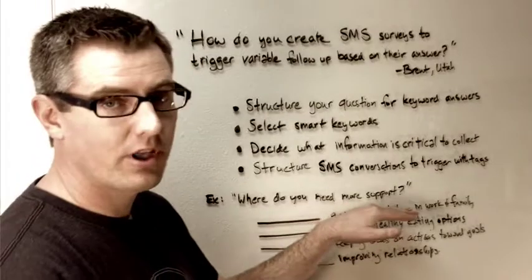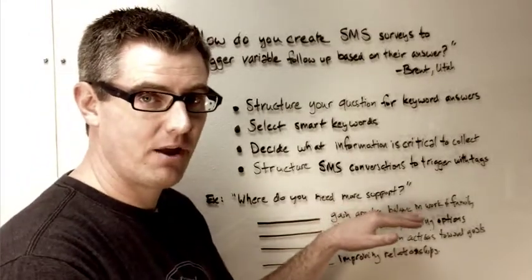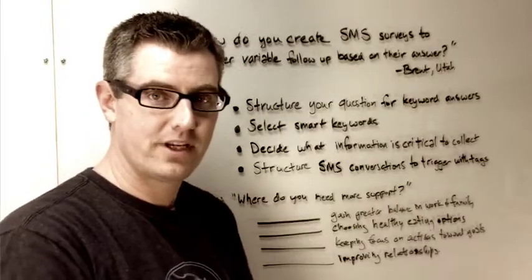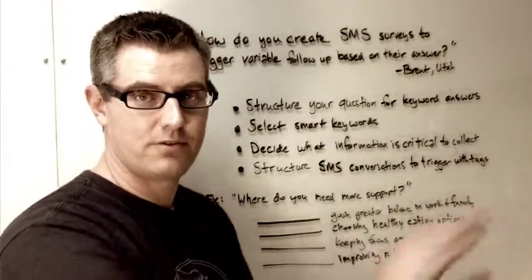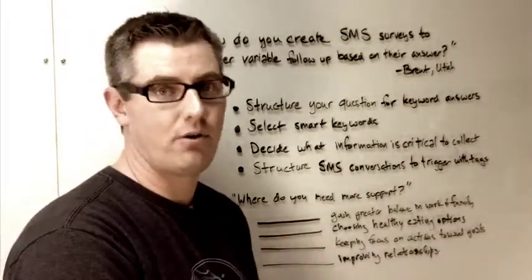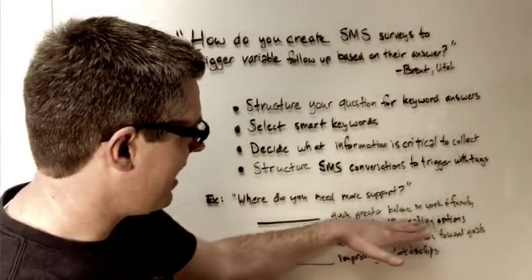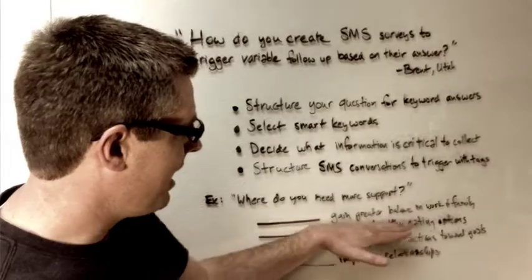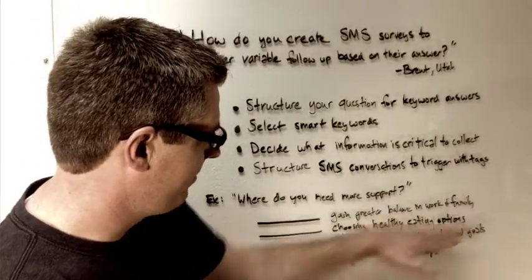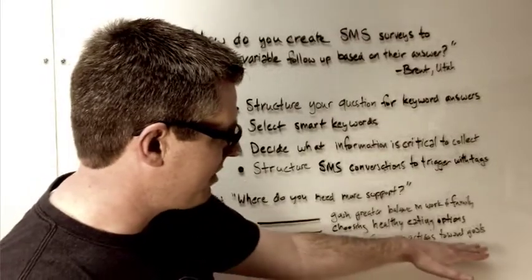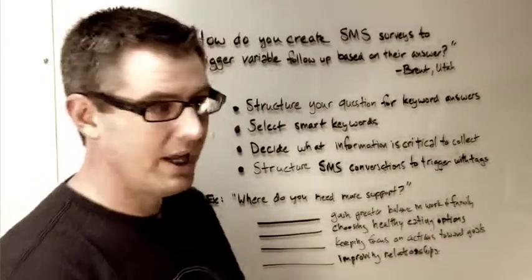So in that case, he came up with four different potential answers where he would be able to service somebody. So where do they need more support, letting them dictate where they need the help, and then giving them four options so he kind of put those into four different containers or paths that could lead down to a specific follow-up that would be directed right towards their need. So in his case, he came up with four different answers. Gain greater balance in work and family, choosing healthy eating options, keeping focus on actions towards goals, or improving relationships.